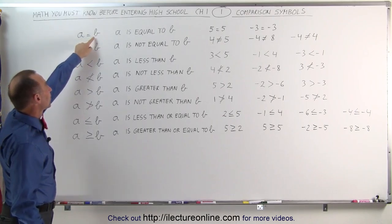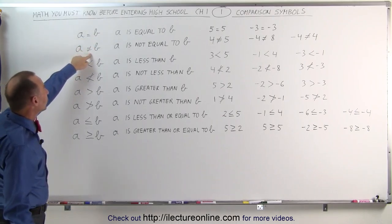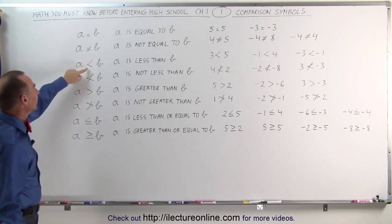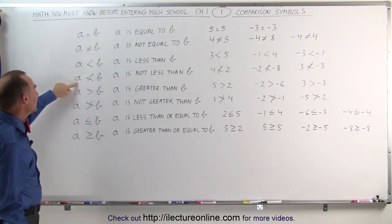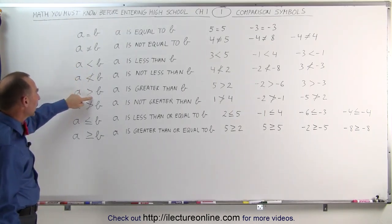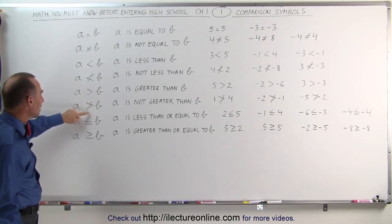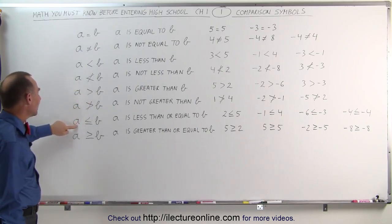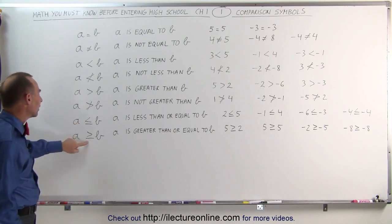A equals B. A is not equal to B. A is less than B. A is not less than B. A is greater than B. A is not greater than B. A is less than or equal to B. A is greater than or equal to B.